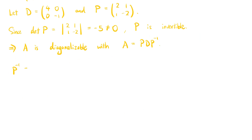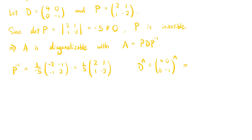We compute the inverse of P, which equals (1/negative 5) times the matrix [negative 2, negative 1; negative 1, 2], which equals (1/5) times the matrix [2, 1; 1, negative 2]. Also, D to the power n equals [4, 0; 0, negative 1] raised to the power n. Since this matrix is diagonal, we raise the diagonal entries to the power n, so we get the matrix [4^n, 0; 0, (negative 1)^n].